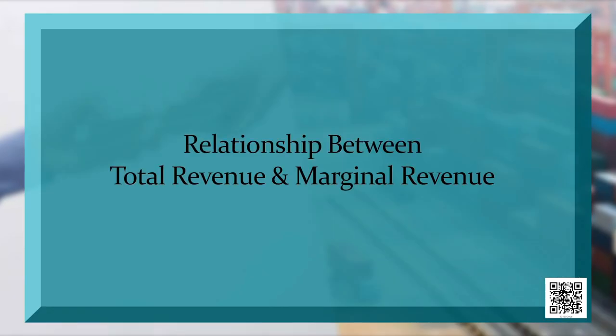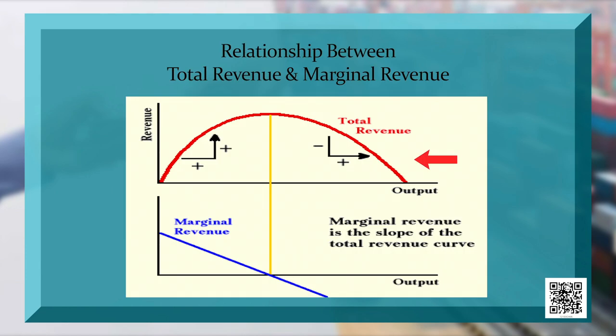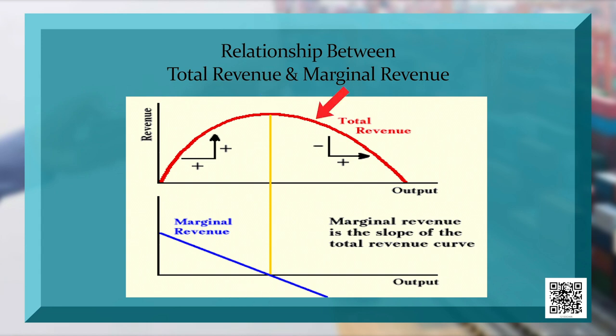Further, the relationship between TR and MR. TR stands for Total Revenue and MR stands for Marginal Revenue. TR increases initially, it reaches to maximum and finally declines. It always remains positive, but Marginal Revenue keeps on declining. When TR is maximum, MR becomes zero, and when TR begins to decline, MR becomes negative.